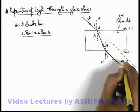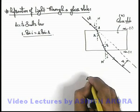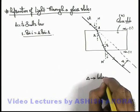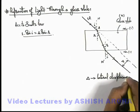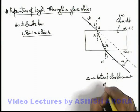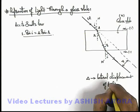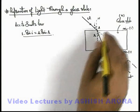This displacement we denote by Δ, and here Δ we term as lateral displacement of light ray. This is due to refraction through the glass slab.